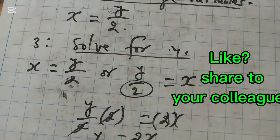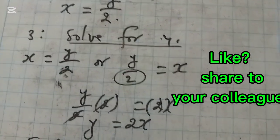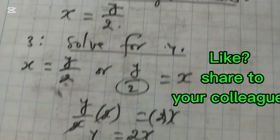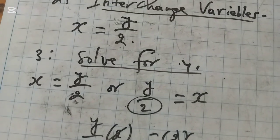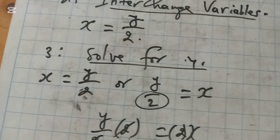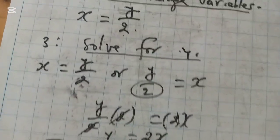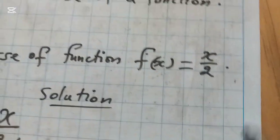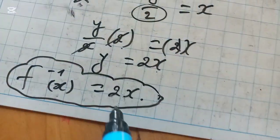So the inverse of the function x over 2 is equal to 2x. This is the inverse of the function f(x). This is the inverse of the function f(x) which is equal to x over 2. Its inverse is 2x.